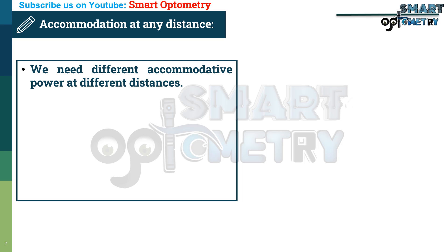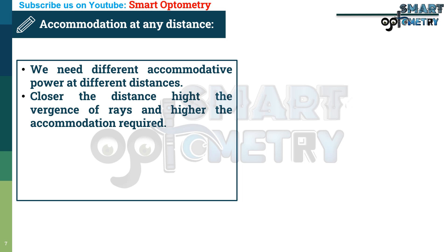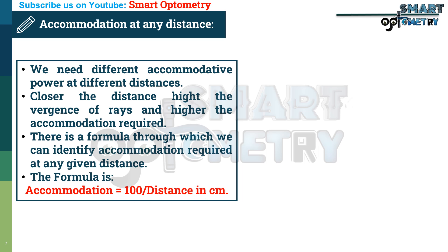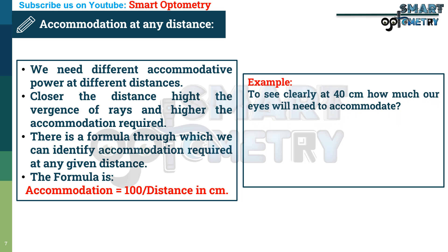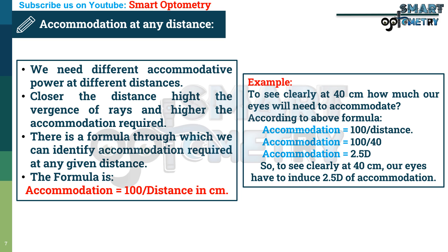We need different accommodative power at different distances. The closer the distance, the higher the burden of accommodation required. There is a formula to identify accommodation required at any given distance: required accommodation equals 100 divided by distance in centimetres. For example, to see clearly at 40 cm, accommodation required equals 100 divided by 40, which equals 2.5 diopters. So to see clearly at 40 cm, our eyes have to induce 2.5 diopters of accommodation.